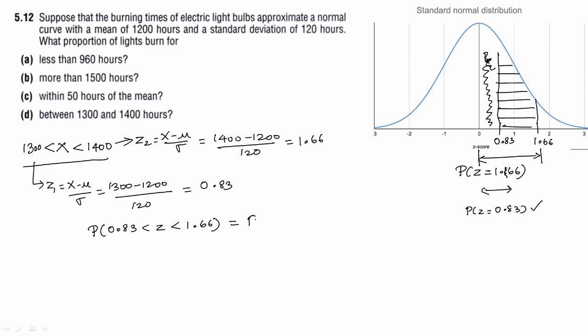So we calculate P of z equal to 1.66 minus P of z equal to 0.83. From the table, 1.66 gives 0.4515 and 0.83 gives 0.2967. Simplifying, we get 0.1548 as our answer. The key logic in normal distribution is understanding the curve and how to find areas by subtracting portions. These are the two videos on normal distribution. If you have any doubts, please comment. Thank you, bye.